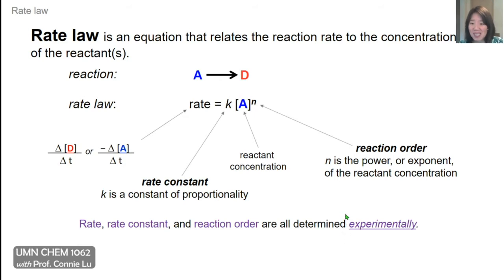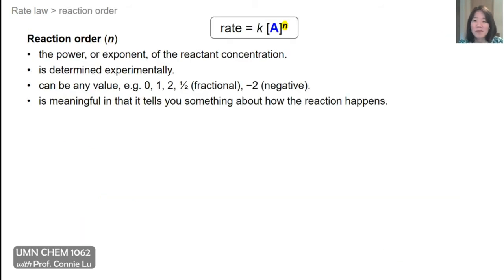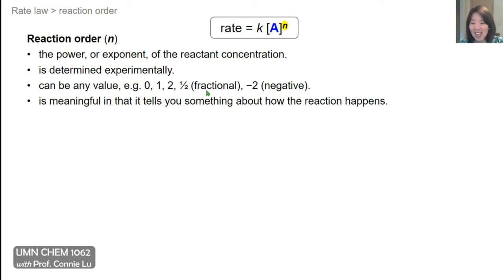In the next couple of slides, we're going to delve into the reaction order and the rate constant in more detail. Reaction order N is the power or exponent of the reactant concentration, and it has to be determined experimentally. N can really be any value — an integer, zero, a fraction, or even negative. In general chemistry, we focus primarily on the simple cases: N equals zero, one, and two.